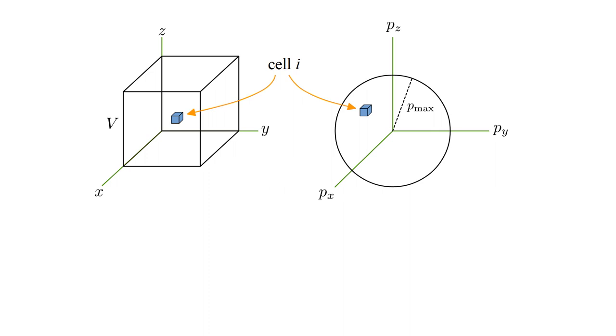And each phase-space cell has the same probability of being occupied. Let's take p_max as p_max squared over 2m equals the average kinetic energy of an atom, three halves kT. From which, p_max equals three mkT to the one-half power. The total phase-space volume, Z h cubed, is then V from coordinate space times four pi over three p_max cubed from momentum space. Dividing by h cubed, we get Z equals V times four pi over three times three mkT over h squared to the three-halves power.